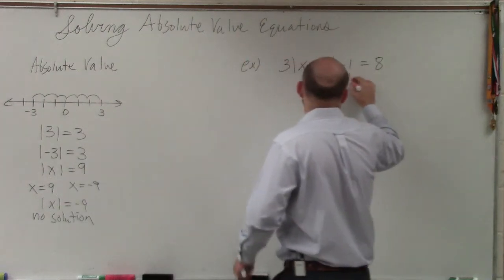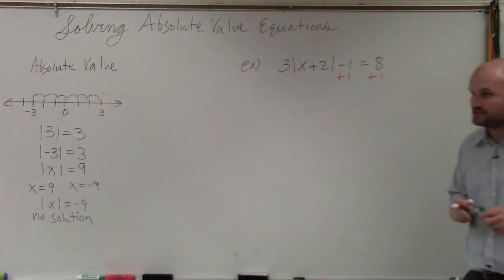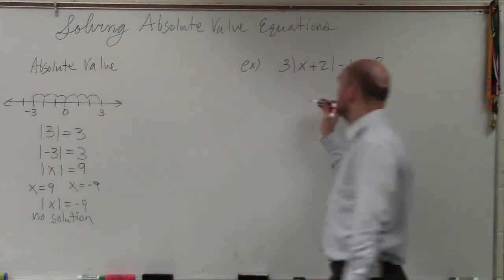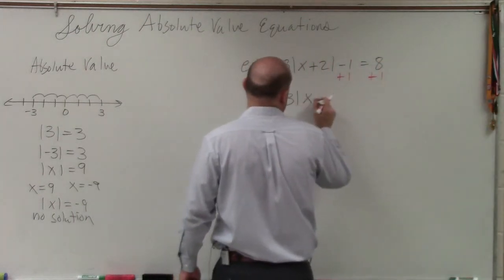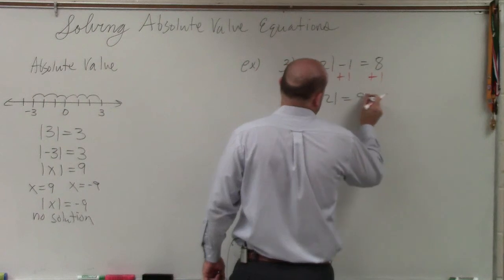So the first thing you're going to want to do is always undo addition and subtraction, just like solving an equation. So therefore, I have 3 absolute value of x plus 2 equals 9.